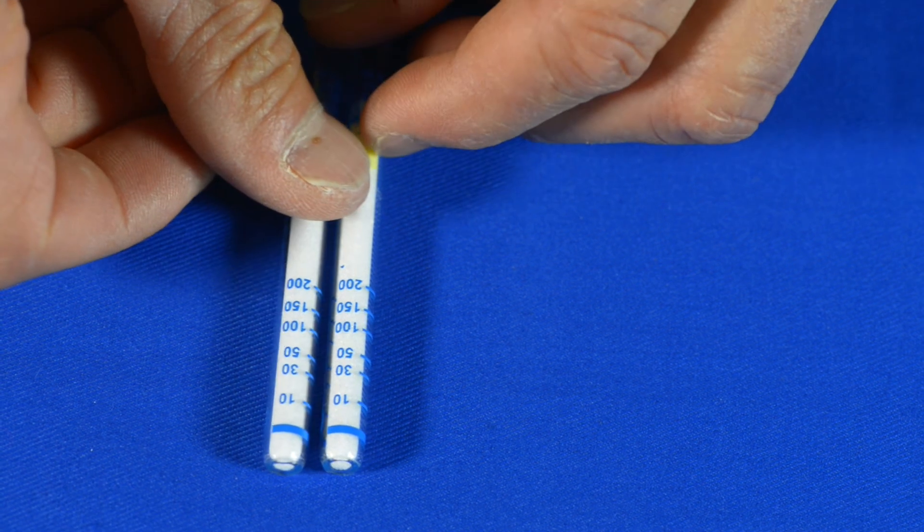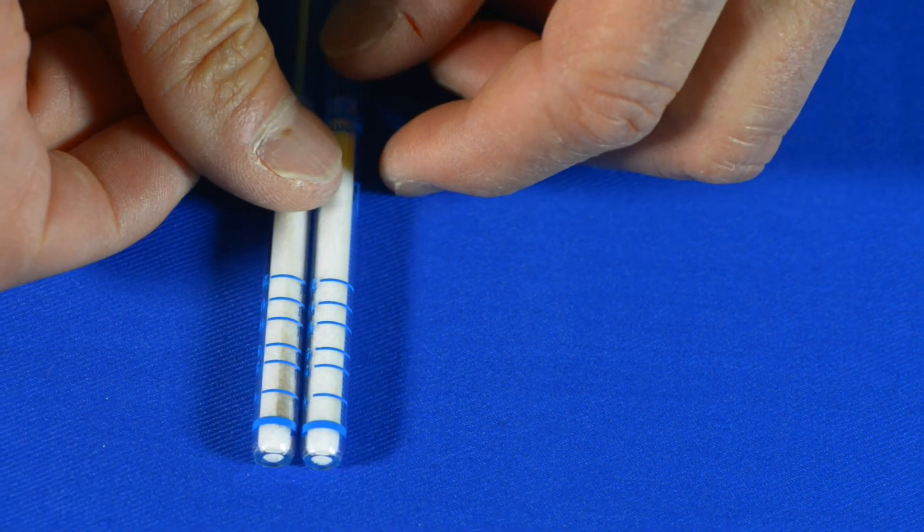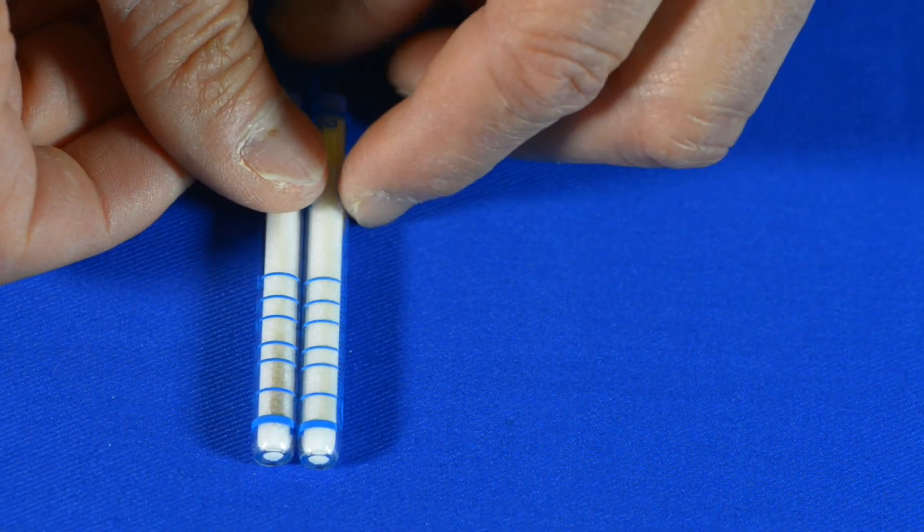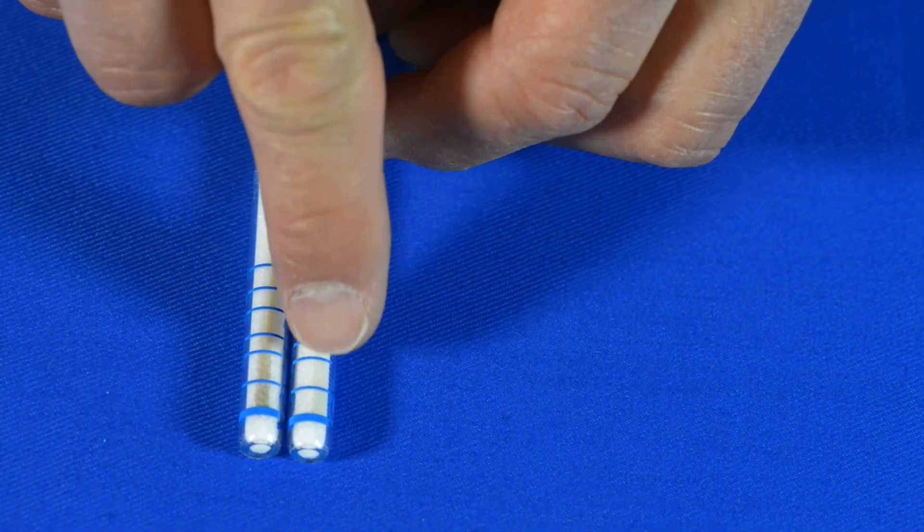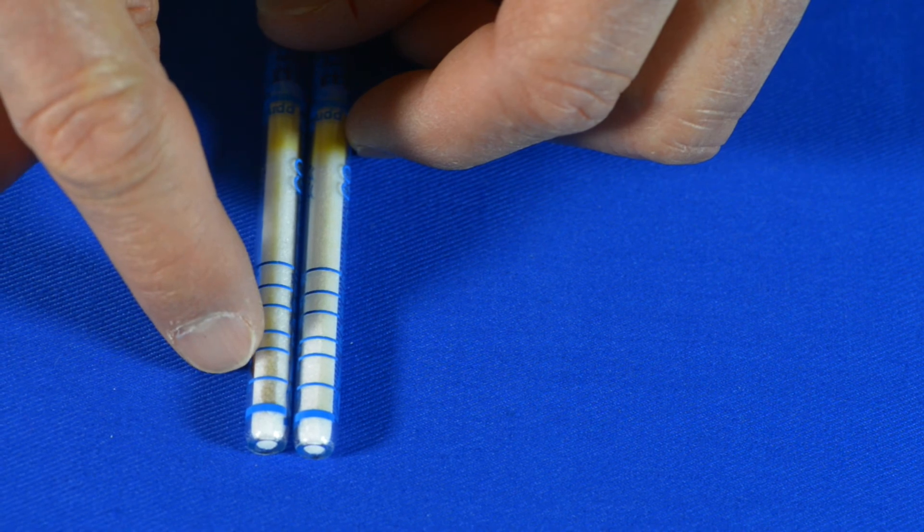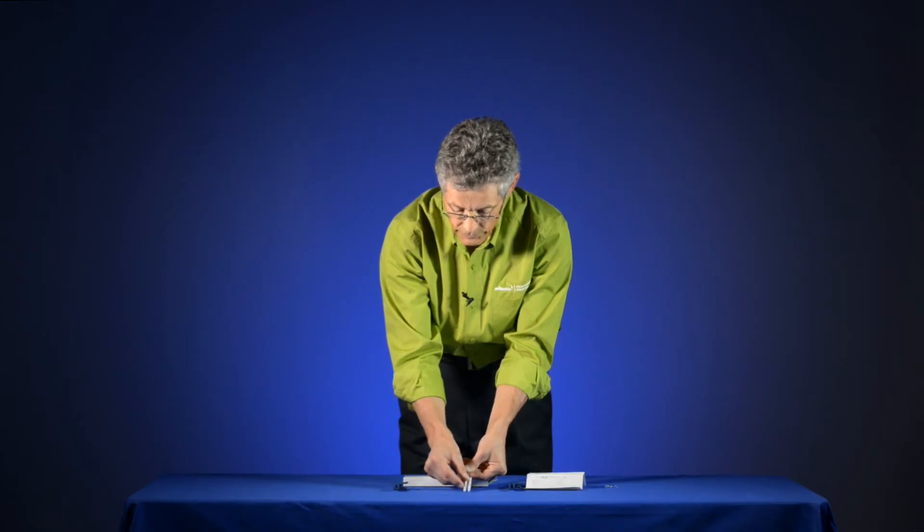You can see the one on my left is still clear, whereas the one on the right has got a darker stain occurring across it. And I want to know how far that stain occurred so I can see it's crossed the second line.